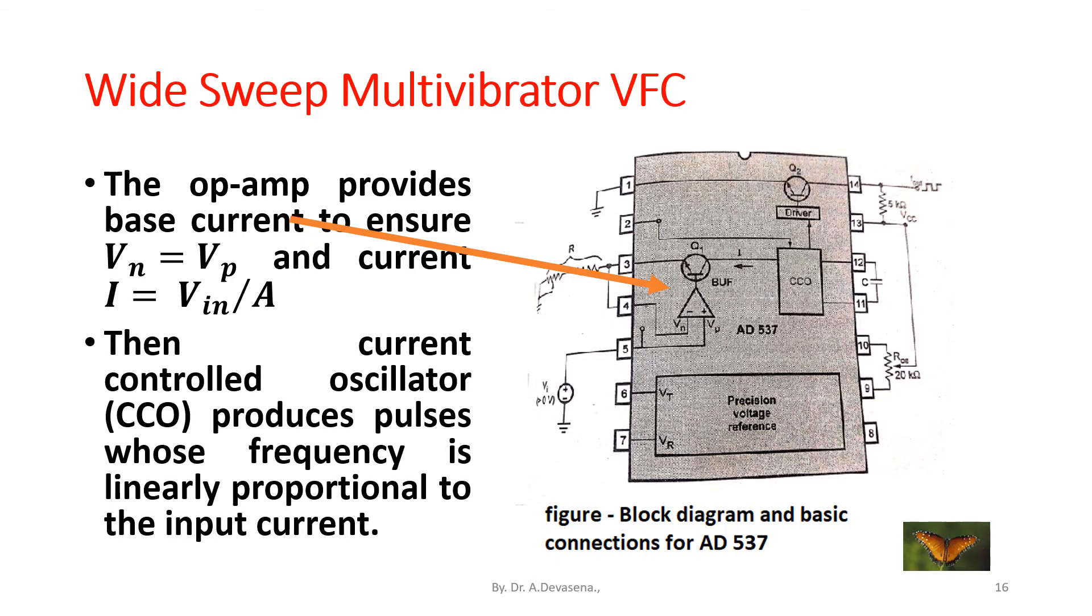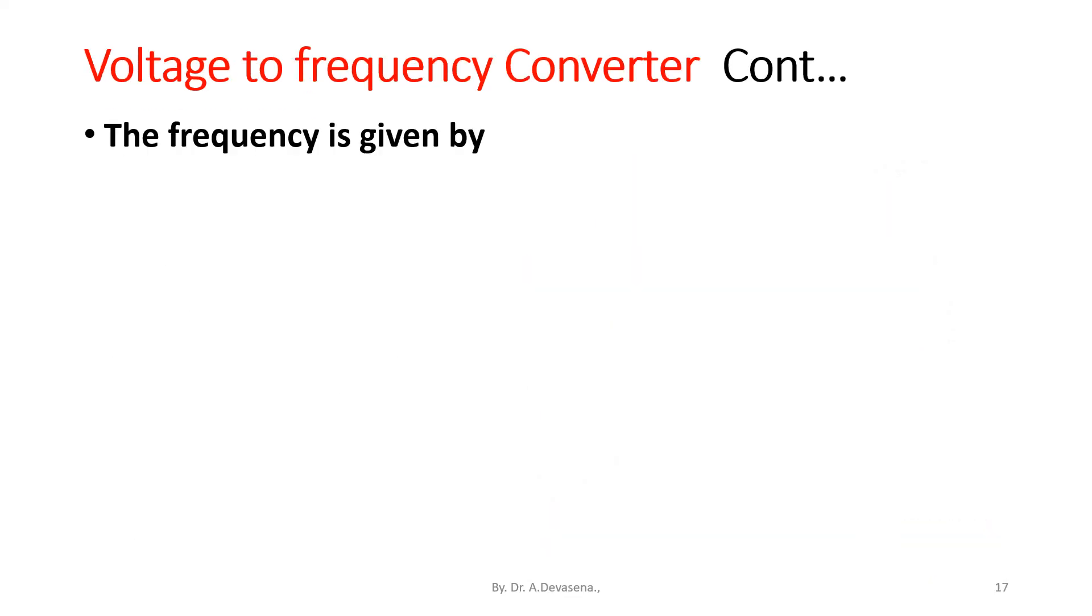Then current controlled oscillator CCO produces pulses whose frequency is linearly proportional to the input current. The frequency is given by output frequency f_out equals I divided by C times 10 volts.